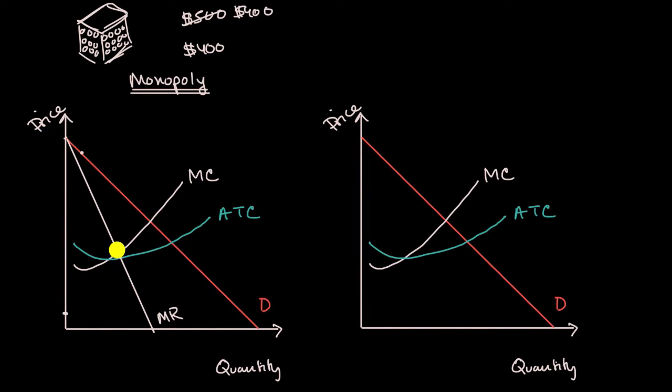And we've already talked about it in multiple videos. For any firm, it's rational to produce the quantity where marginal cost is equal to marginal revenue. So this monopoly would produce this quantity. And the price they would get, well, that quantity, we go to look at the demand curve, the price would be right over there.